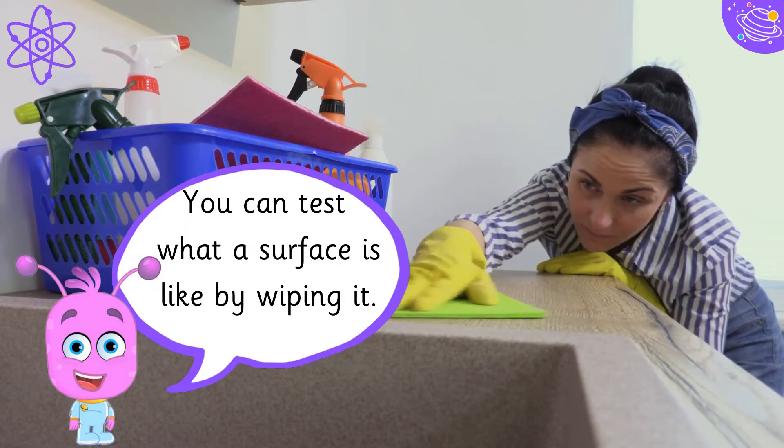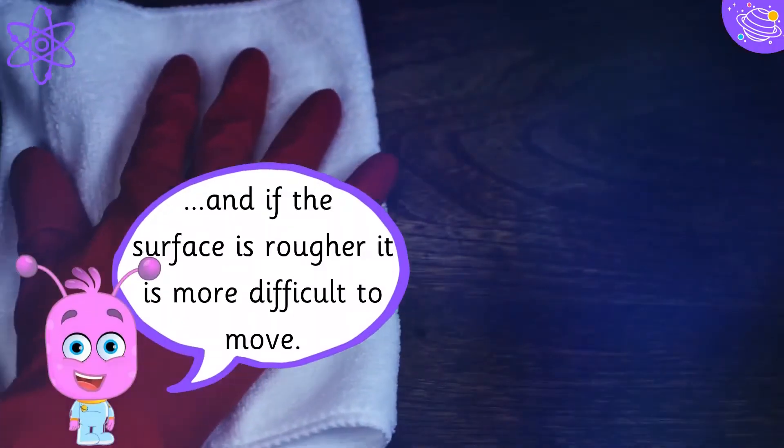You can test what a surface is like by wiping it. If the cloth moves easily, then the surface is smooth. And if the surface is rougher, it is more difficult to move.